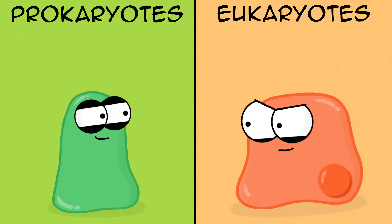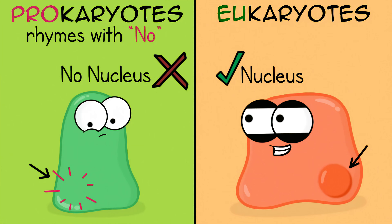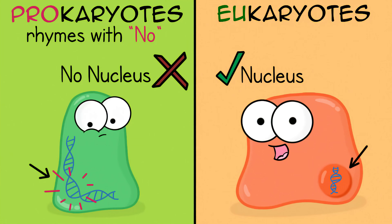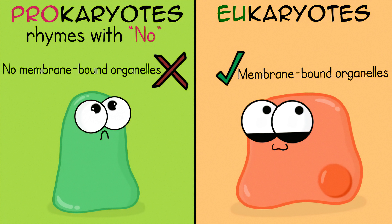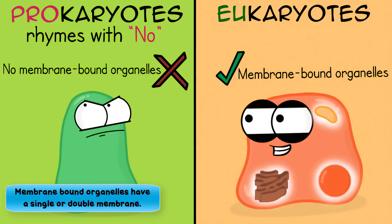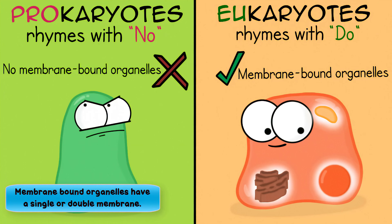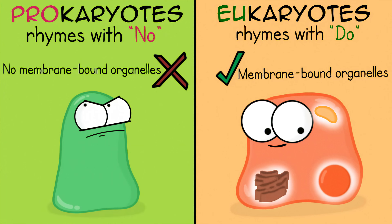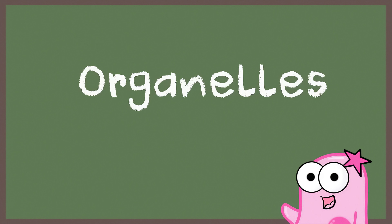But what makes them different is a big deal. Prokaryote — the 'pro' rhymes with 'no' — and they have no nucleus, which holds the genetic material and controls the cell's activities. Prokaryotes have no membrane-bound organelles. Membrane-bound organelles are fancy organelles like the nucleus, mitochondria, and Golgi apparatus. Eukaryotes — the 'U' rhymes with 'do' — they do have membrane-bound organelles.